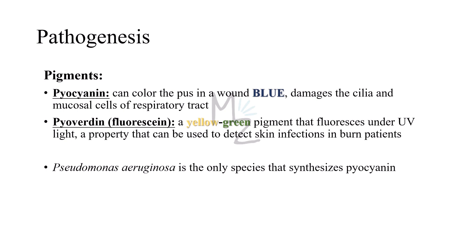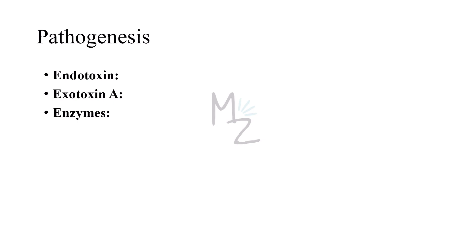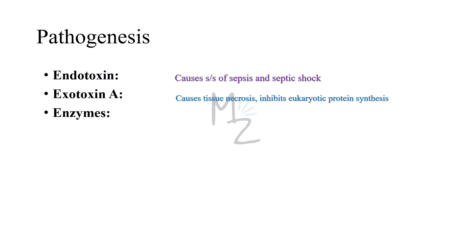Pseudomonas aeruginosa is the only species of Pseudomonas responsible for synthesizing the pigment pyocyanin. Virulence factors: first, endotoxin — like that of other gram-negative bacteria, responsible for causing symptoms of sepsis and septic shock. Second, exotoxin — the best known is exotoxin A, which causes tissue necrosis. It inhibits eukaryotic protein synthesis by the same mechanism as diphtheria exotoxin, namely ADP ribosylation of elongation factor 2.